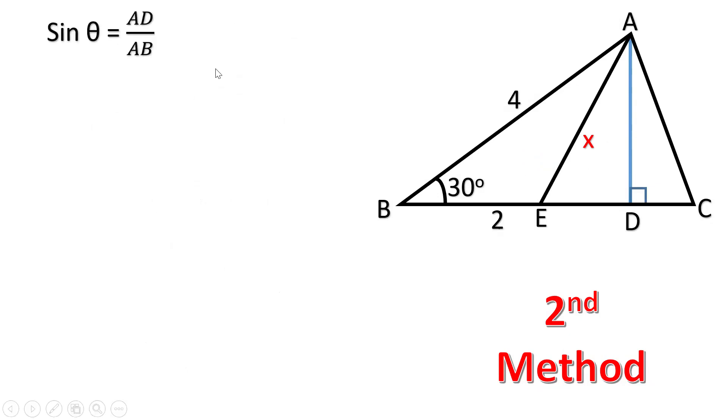In triangle ABD, which is a right angle triangle, apply sin theta AD upon AB. Sin 30, AD upon AB is 4, and therefore AD is 2.